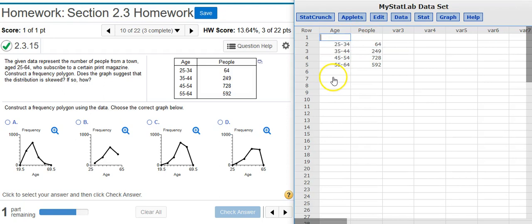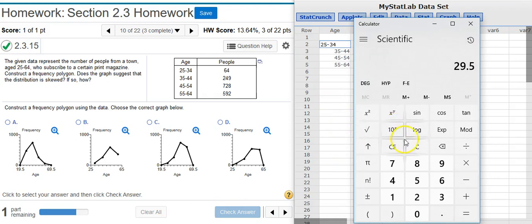And then the midpoint—I need to replace all of these ages with midpoints. So what's the midpoint for this first category? Well, I just simply, if I take my calculator, I'm going to take the upper limit, subtract out the lower limit, divide by two, and then add that to my lower limit. So there's my midpoint. I need to replace this first category with 29.5.